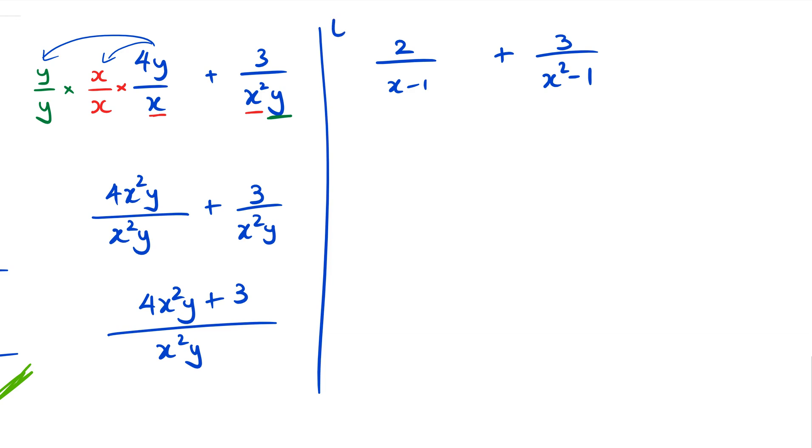But I'm going to show you a quick way of doing this. Let's call this example 2. What we have is 2 over x minus 1. The trick here is looking at x squared minus 1, we can actually factorize that as x minus 1 and x plus 1.